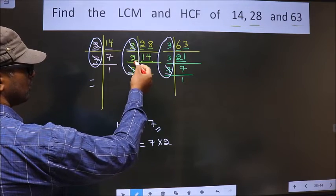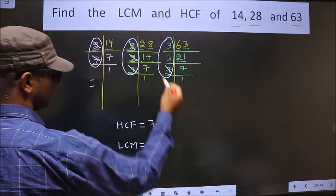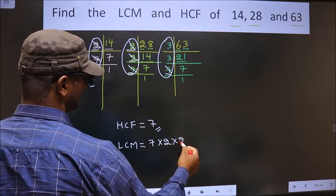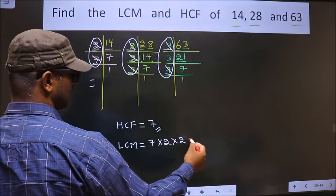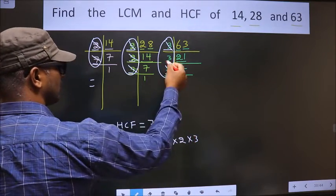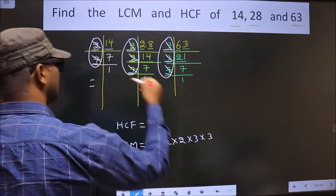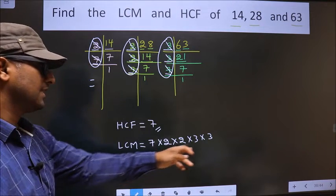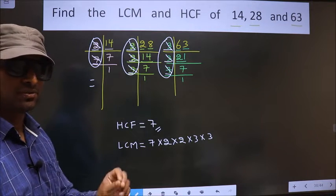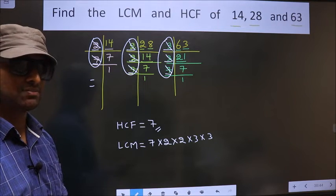Here we have 2 not cut. Do we have 2 here? No. So you cut 2 and write here. Now here 3 is not cut. So you cut 3 and write here. One more 3 not cut. So cut and write here. Now each number has been cut. So now you multiply these numbers. Whatever number you get, that is your LCM. So let us multiply.